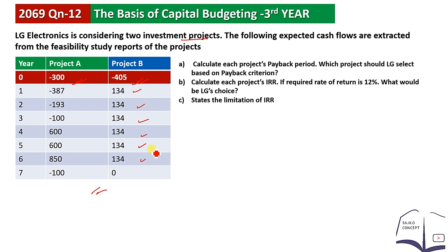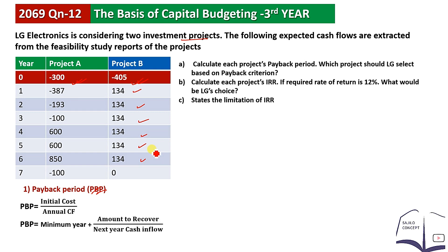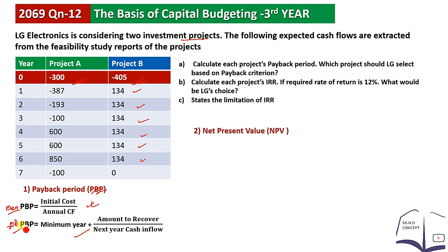For the payback period, the formula takes into account the cash flow and the initial investment cost. For uneven cash flow, the formula is: minimum year plus amount to be recovered divided by next year's cash inflow. For even cash flow, payback period equals initial cost divided by annual cash flow.